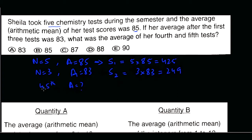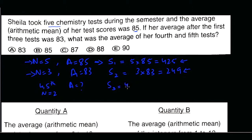Now I want to find the average for the fourth and fifth tests, where n = 2. I need their sum. The total sum for five tests was 425, and the sum for the first three was 249, so the sum for the remaining two tests is 425 − 249 = 176. The average is then 176 / 2 = 88.